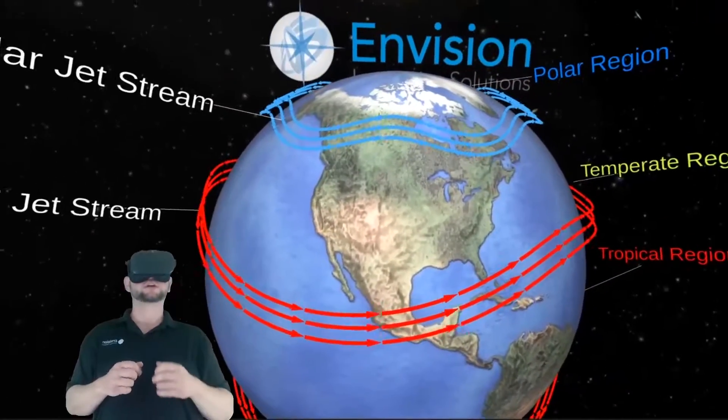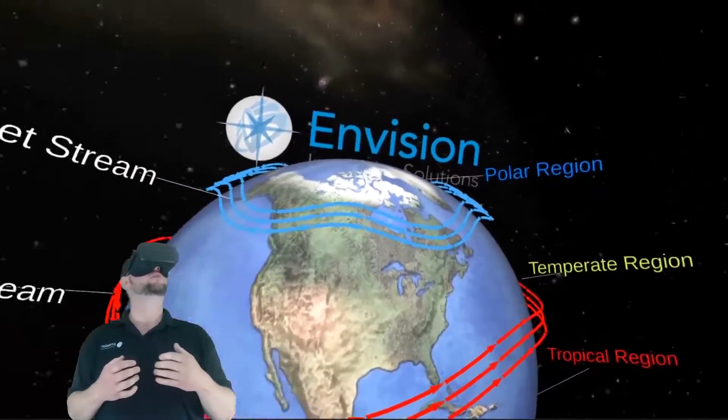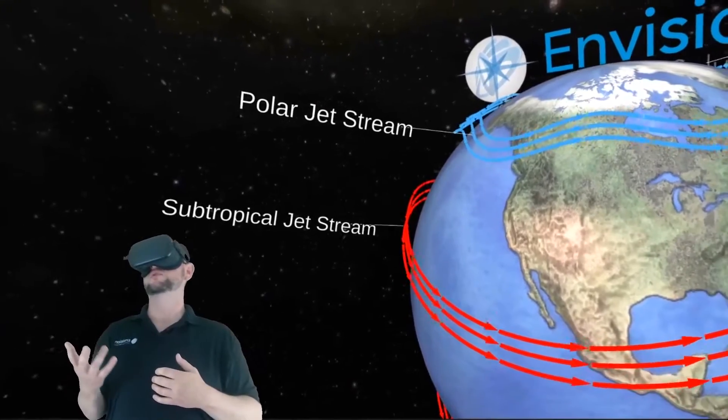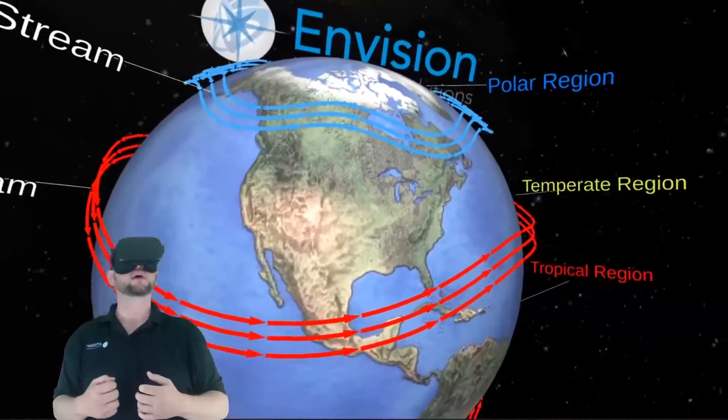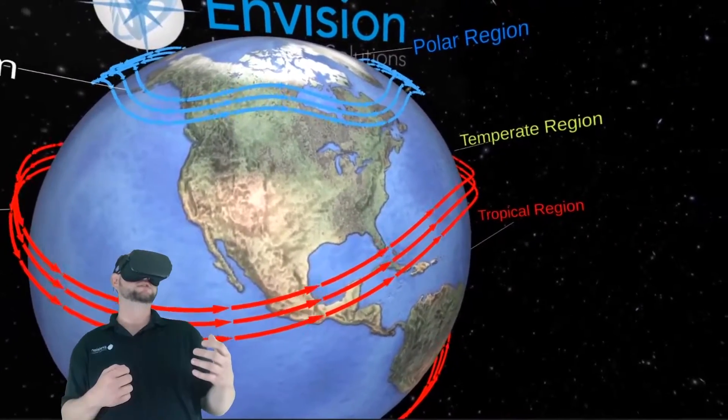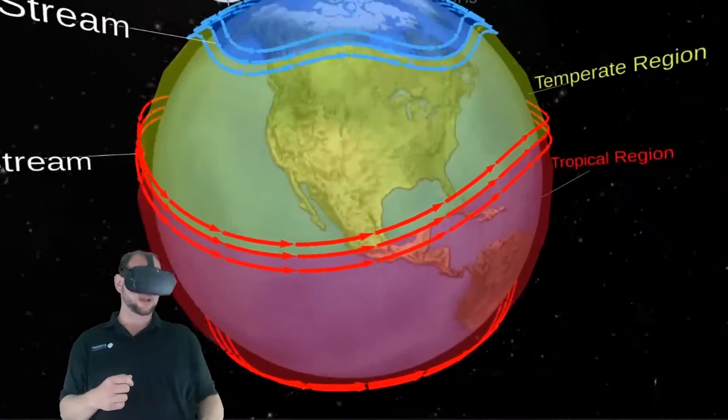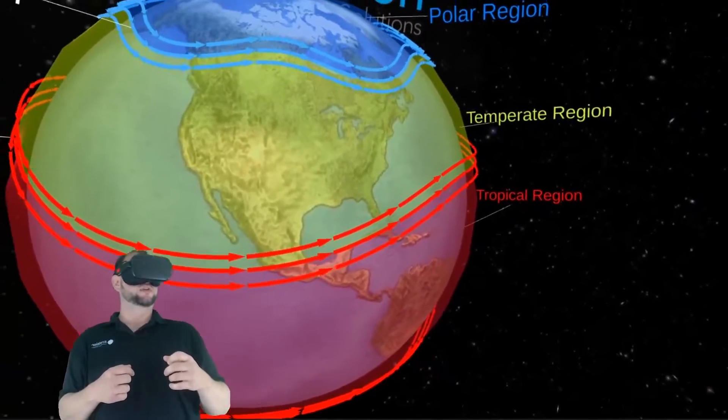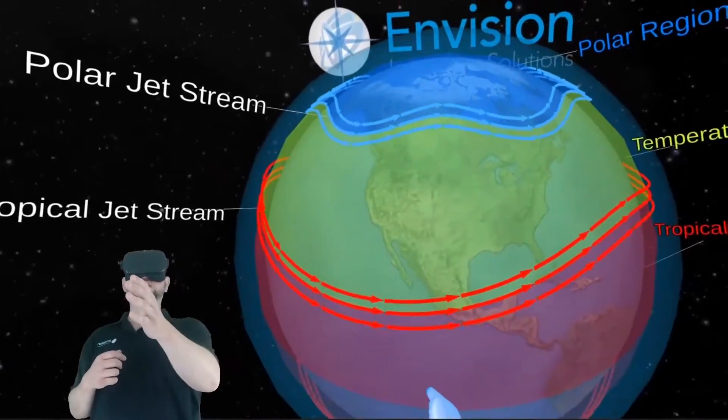So then we can move along and look at jet streams. So here you have your polar jet stream and your subtropical jet stream outlined in blue and red. And you have your polar region, temperate region, and tropical regions split by those jet streams. And if we look at this view, you can see how the air masses are separated.